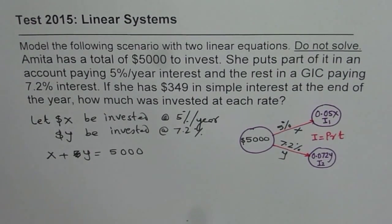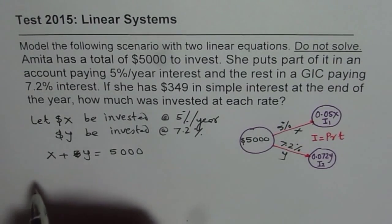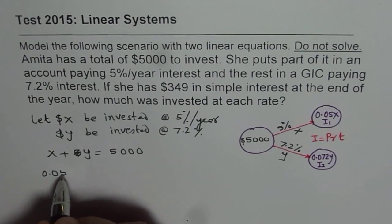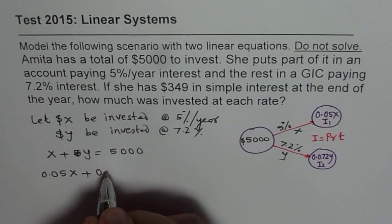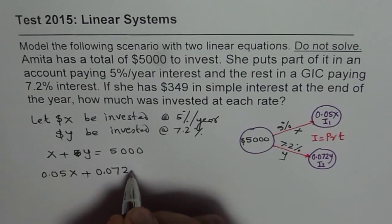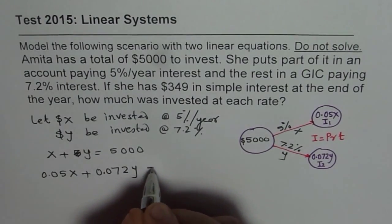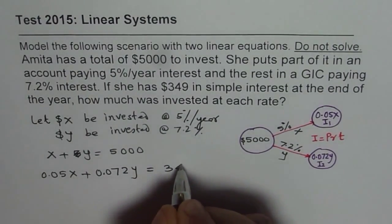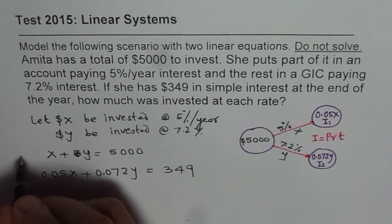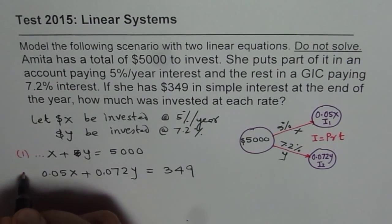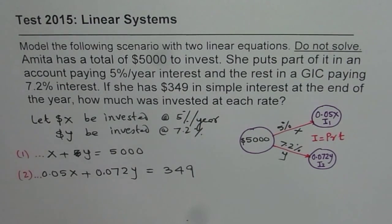Combination of this is $349. So we can write 0.05 of X plus 0.072 of Y amount is equals to 349. So that gives us the second equation. So we have two equations. Equation 1 and that is equation 2. Both of them are linear equations and they form a linear system.